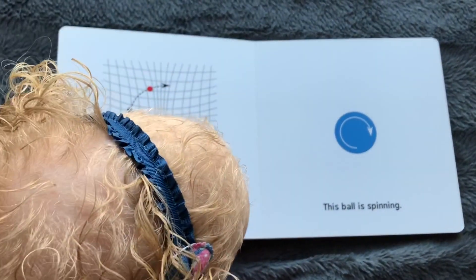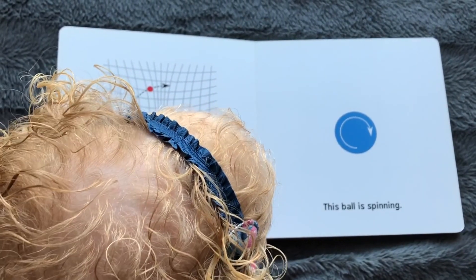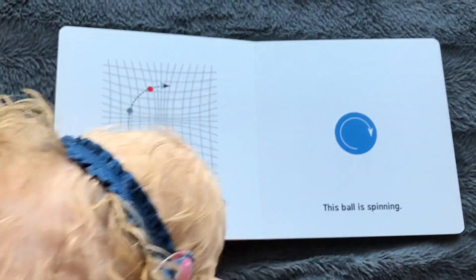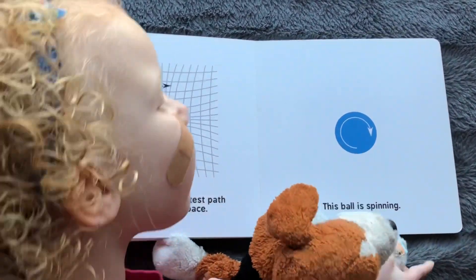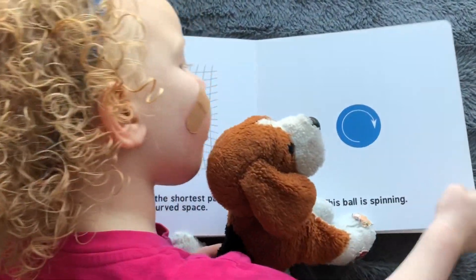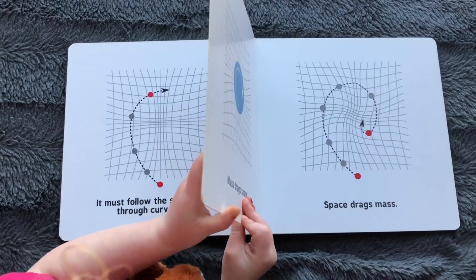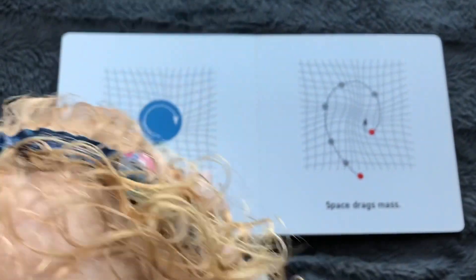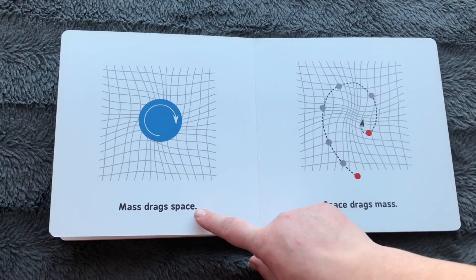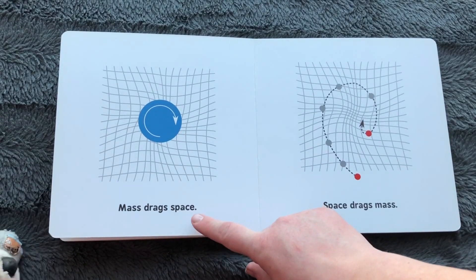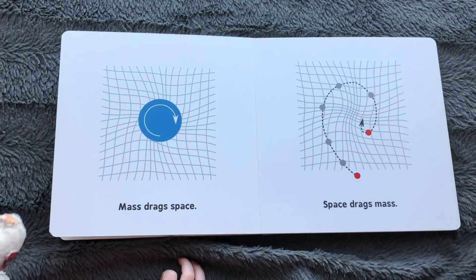The ball is spinning. Can I get the space? Do you have a picture? There you go. Mass drags space. See how it's spinning? And it's dragging the space?